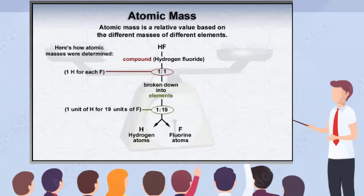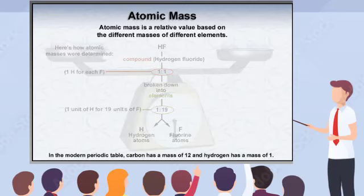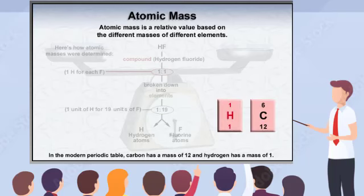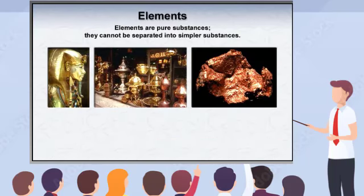The atomic masses presented in the modern periodic table are determined in a similar manner. For now, it will suffice to know that carbon has a mass of 12 and hydrogen, which is 12 times lighter, has an atomic mass of 1. In the next few scenes, you will learn the role that atomic mass plays in the history of the periodic table of the elements.